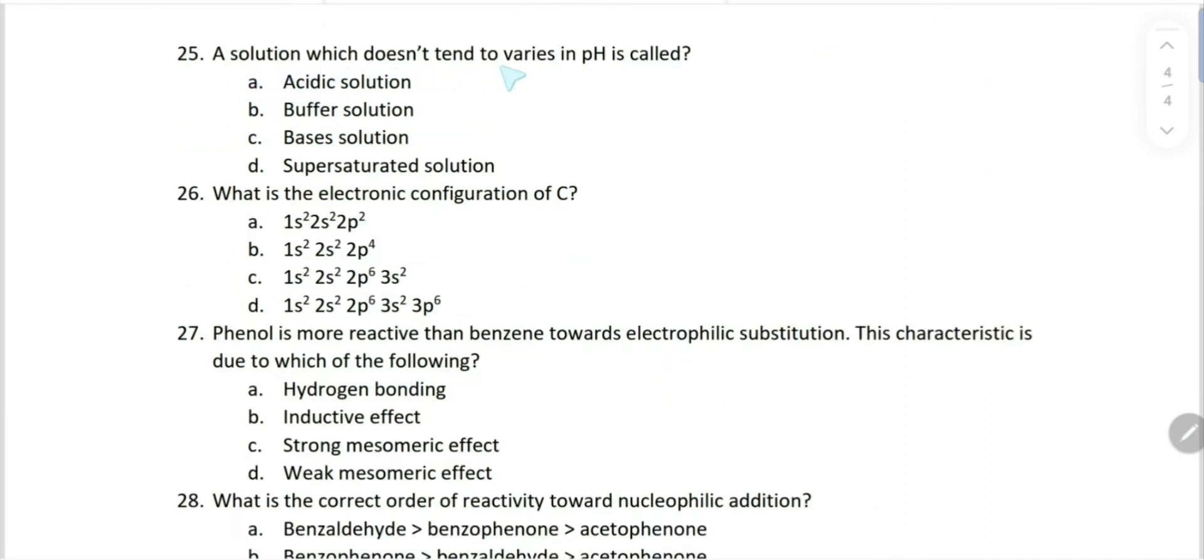A solution which doesn't tend to vary in pH is called a buffer solution, which maintains pH. What is electronic configuration of carbon? Carbon having atomic number 6, that is 1s² 2s² and 2p². This is carbon, that is choice A.